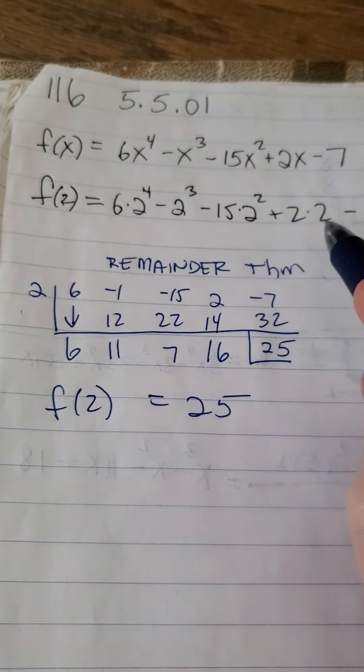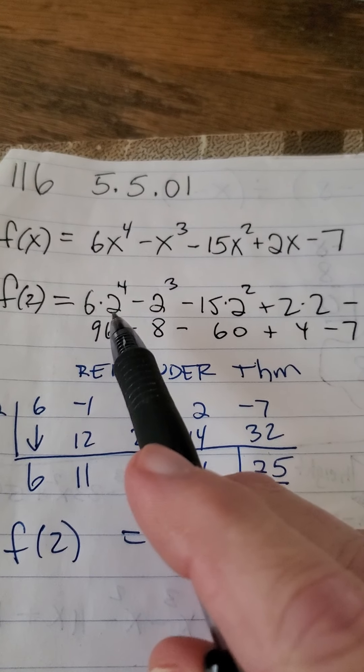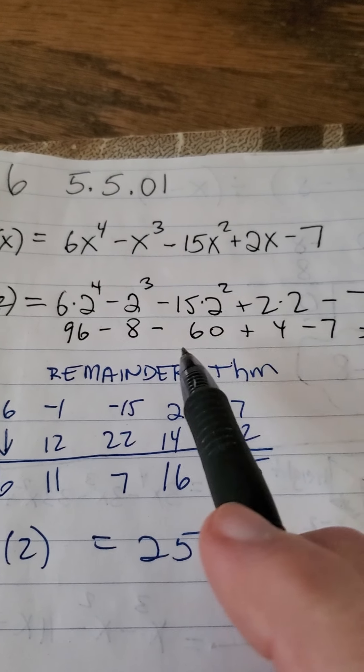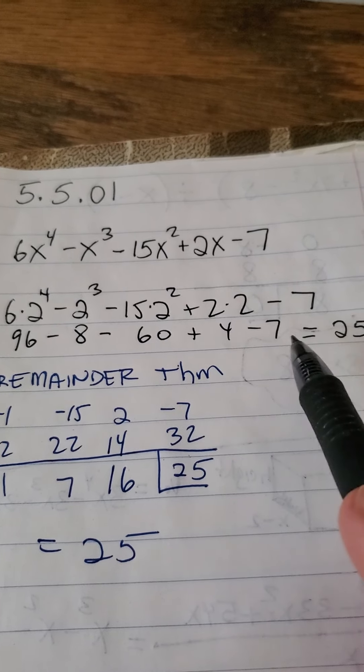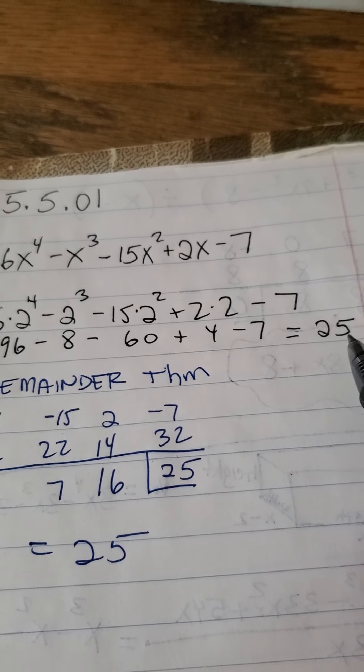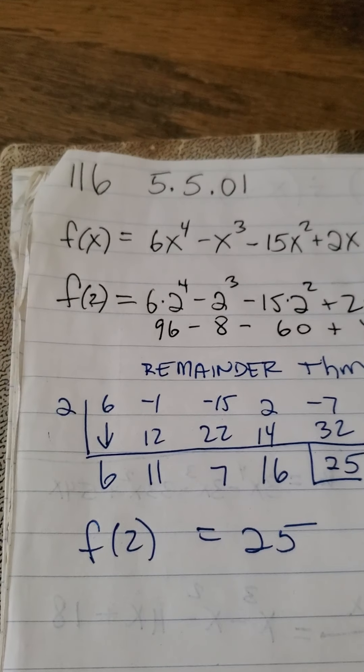By the way, I did crunch all the numbers in. I crunched this all out. It becomes 96 minus 8 minus 60 plus 4 minus 7, and it does indeed equal 25. So that is the remainder theorem.